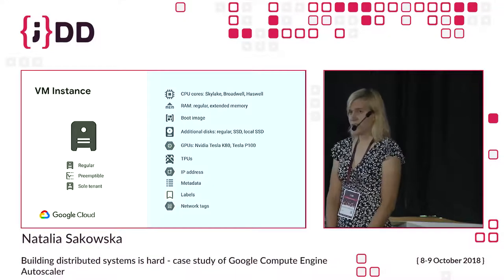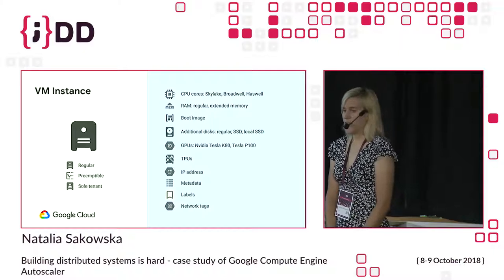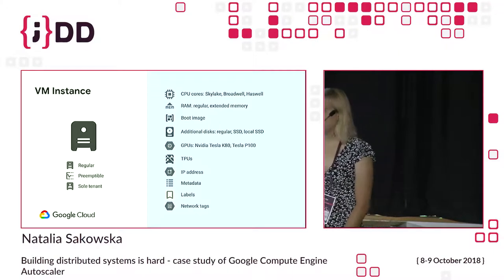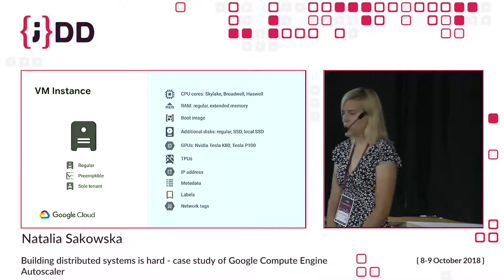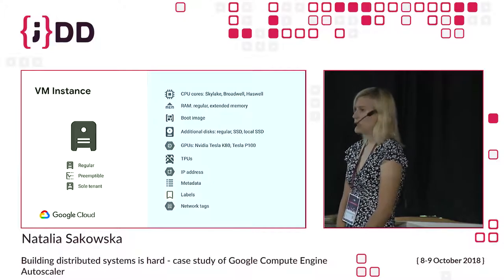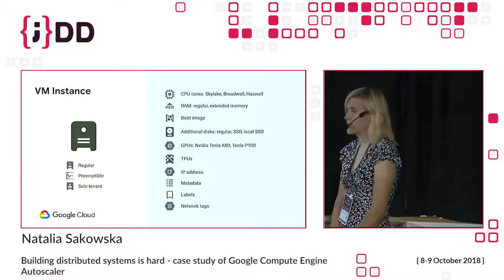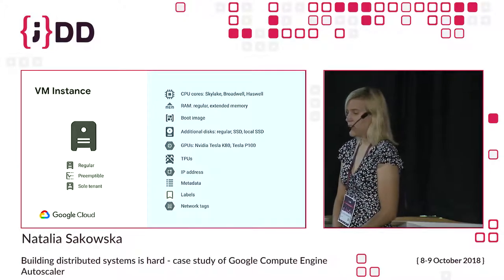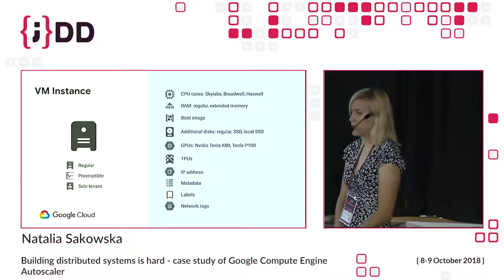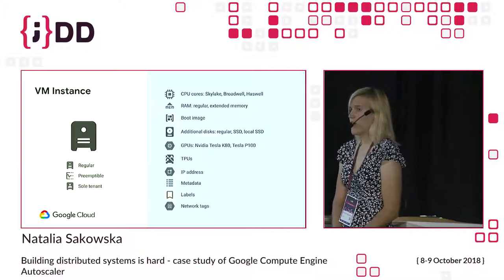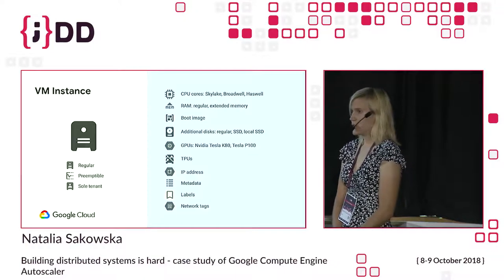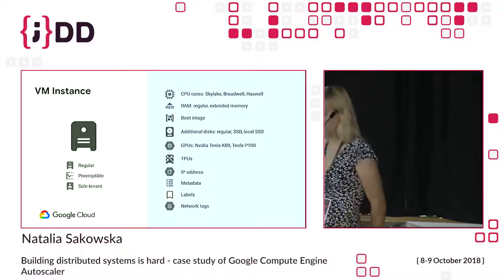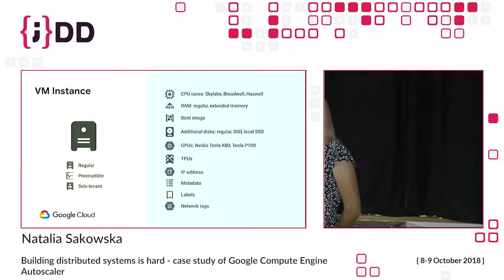When defining a virtual machine, you can choose a bunch of parameters: shape, image, you can have GPUs, TPUs, you can have a container running on this VM. Also, if you are more into risk, you can choose a preemptible VM, which is less expensive but also less predictable because it can be preempted at any moment.